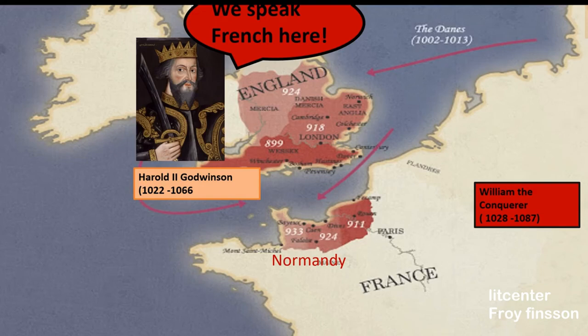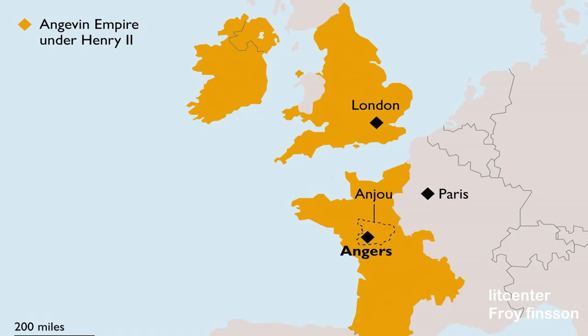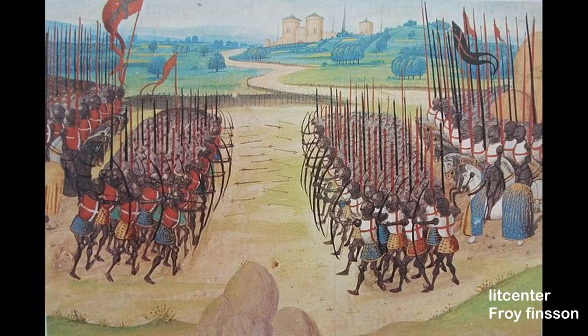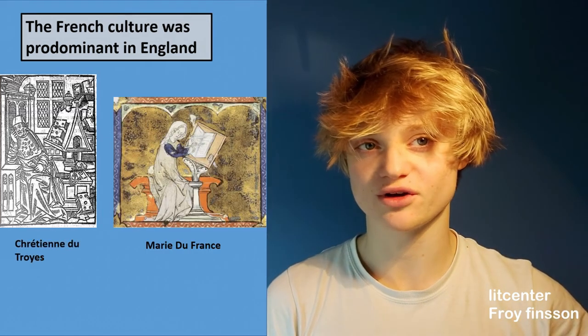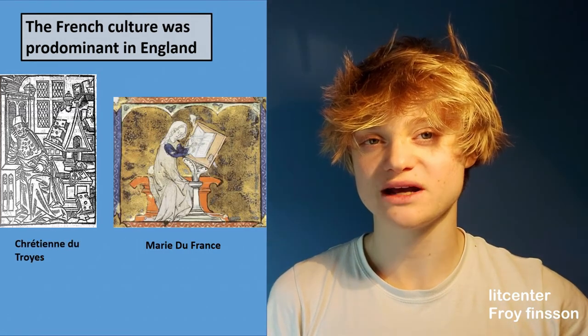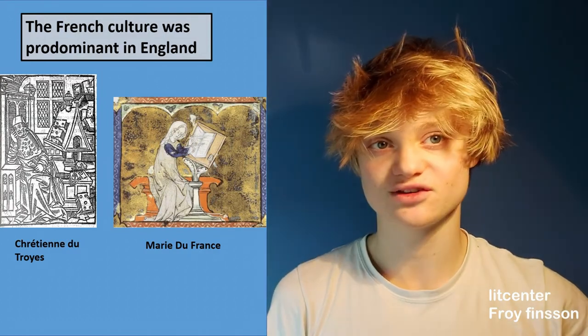This resulted in the English court and nobility being highly Frenchified by the Normans. During the centuries that followed, the English territory vastly increased, and as you can see, most of France was under English control. But those overseas territories were eventually lost during the Hundred Years' War. During the Anglo-Norman period, the French culture was predominant in England, and at the time Chrétien de Troyes and Marie de France were popular writers in France and thus in England.